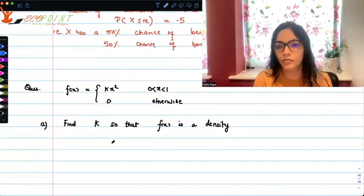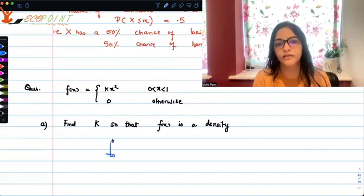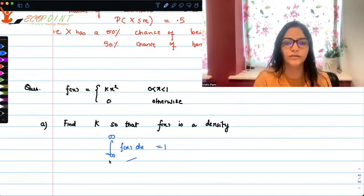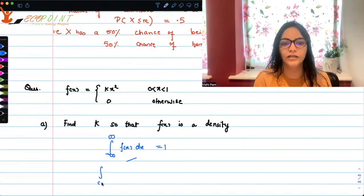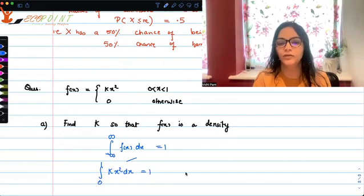So if it's a valid probability density function, that means the total probability from minus infinity to infinity fx dx is equal to 1. The total area has to be 1. So in our case, the domain is 0 to 1.